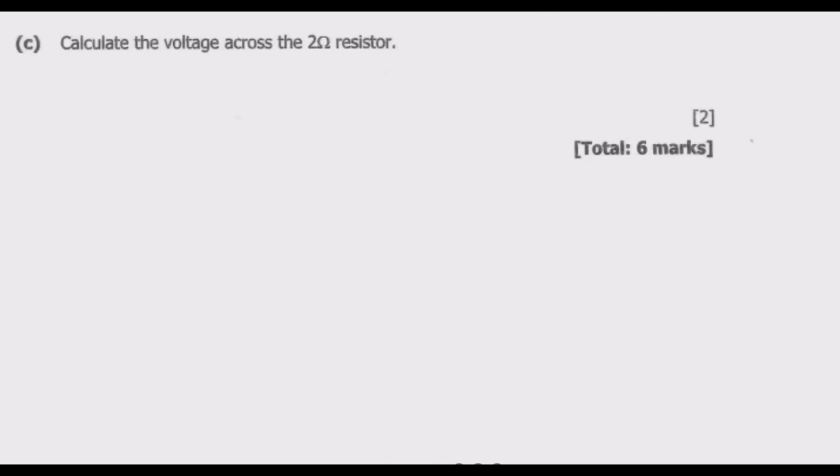So basically to find the voltage we use the formula that voltage is equal to current times the resistor. So we have current is 2 for the entire circuit then multiplied by the resistor which is 2. Then we have 4 volts. So 4 volts is basically the voltage through this resistor.